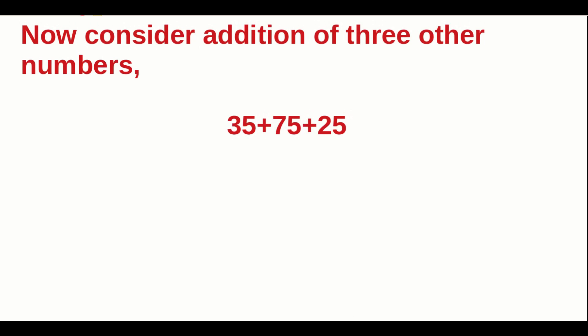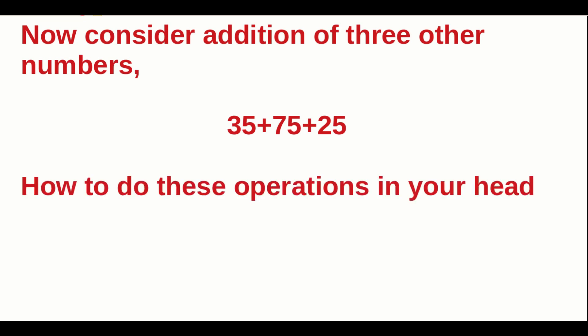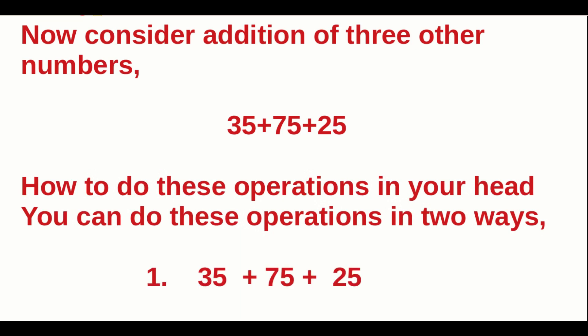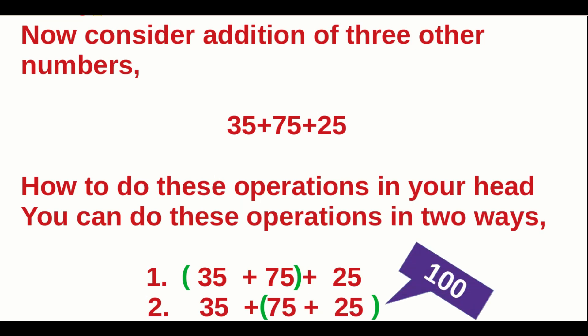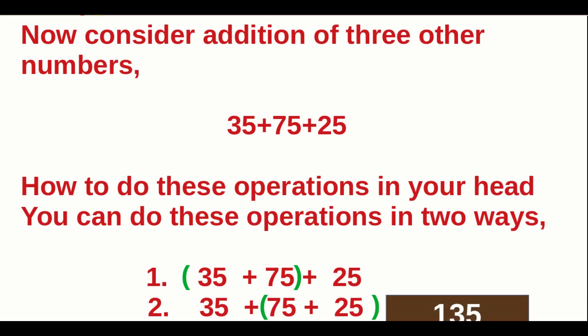Now consider the addition of three other numbers — these are two-digit numbers: 35, 75, 25. How do we do this operation in our head? We can do it two ways. First: add 35 and 75. Second: add 75 and 25. Definitely in the second case, when we add 75 and 25, the answer is 100. Then 100 plus 35 equals 135. When doing this in your mind, the second method is very easy.